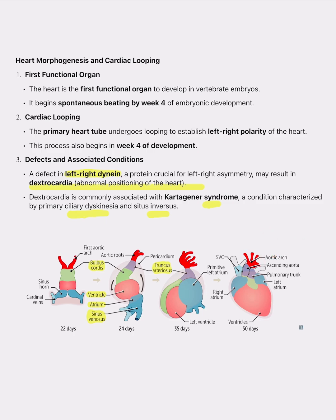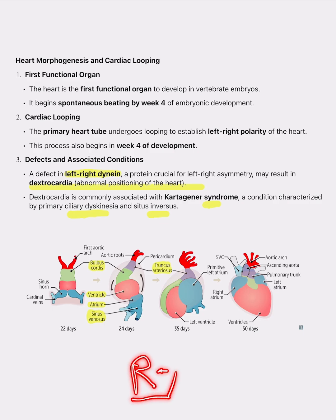However, there are sometimes disruptions in this process, and a defect in left-to-right dynein is seen. Dynein is a motor protein that is crucial for left-to-right asymmetry during development, and a defect in this protein can result in dextrocardia — a condition in which the heart is positioned on the right side of the chest, whereas normally the heart is located on the left side.